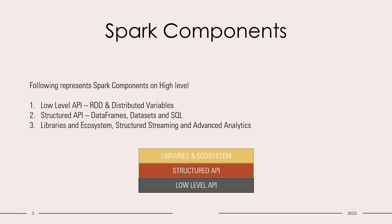Structured APIs such as Spark SQL, DataFrame, and Datasets are built on top of RDD and are optimized for use. The top level consists of libraries and ecosystem such as structured streaming, which is built upon structured APIs, advanced analytics, graph query languages, and other such huge libraries that Spark supports.